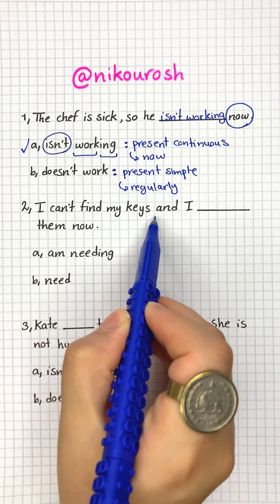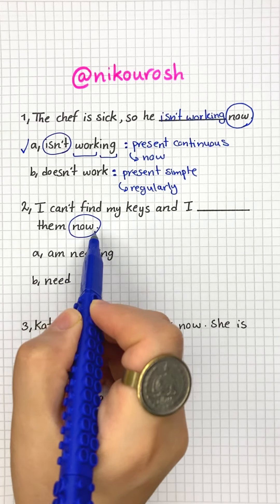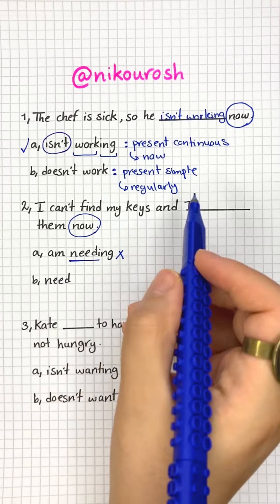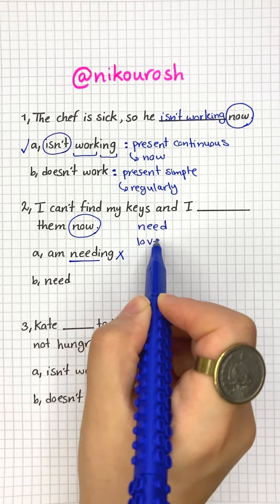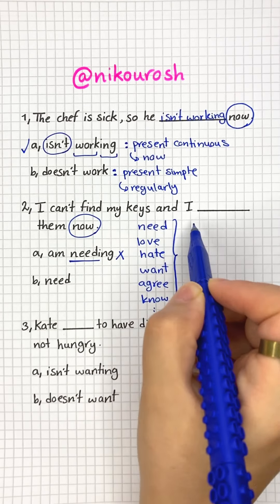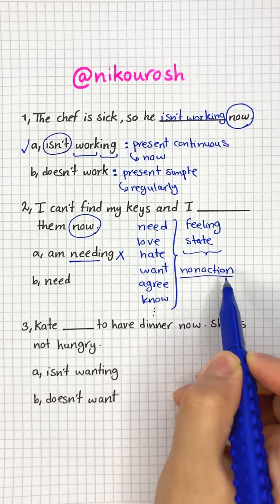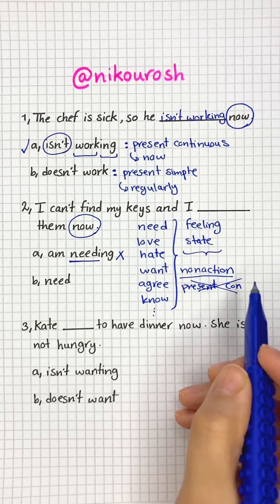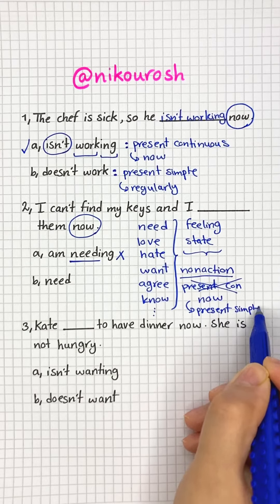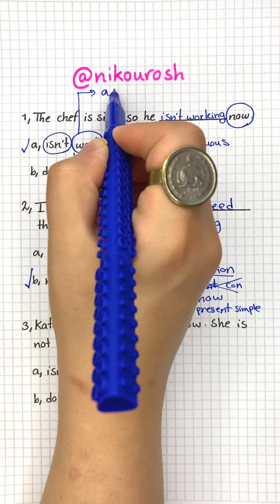I can't find my keys and I blank them now — am needing or need? You might think because we have 'now' the right answer is am needing, but it's wrong. The main verb is need, and verbs like need, love, hate, want, agree, and know — which describe a feeling or a state — are non-action verbs. Non-action verbs are not usually used in the present continuous tense even if we mean right now; we should use them in the present simple tense. So the right answer is need.